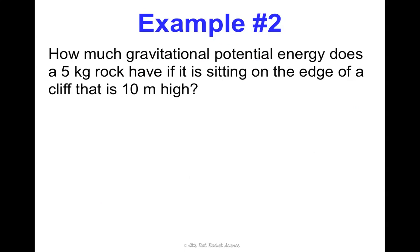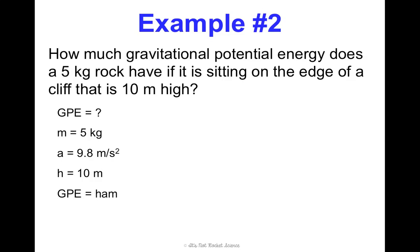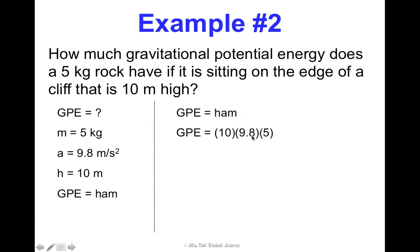Let's do an example of GPE calculations. How much gravitational potential energy does a 5-kilogram rock have if it is sitting on the edge of a cliff that is 10 meters high? We're looking for GPE. Mass is 5 kilograms, height is 10 meters, and acceleration due to gravity is always 9.8 meters per second squared. Our equation is GPE equals ham: 10 times 9.8 times 5 — multiply across and you get 490 joules.